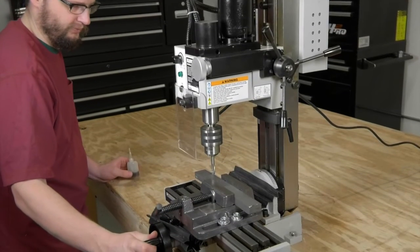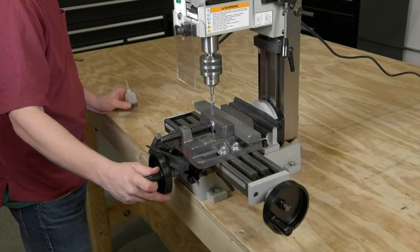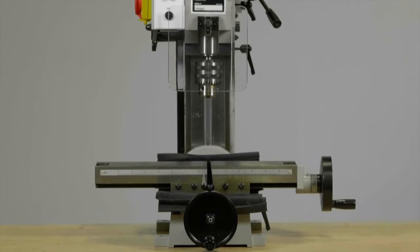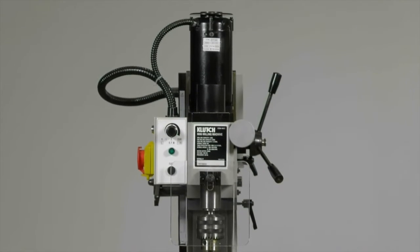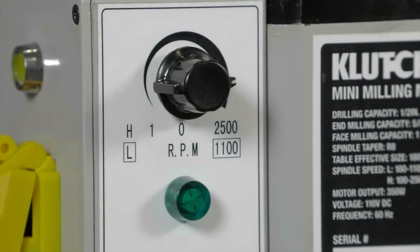This mini milling machine from Clutch is crafted from heavy duty cast iron to run without vibration for smooth operation. The half horsepower variable speed motor has a two-speed gearbox that delivers 350 watts of power and 100 RPM to 2500 RPM.